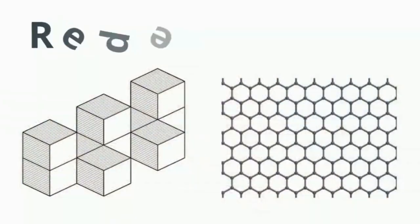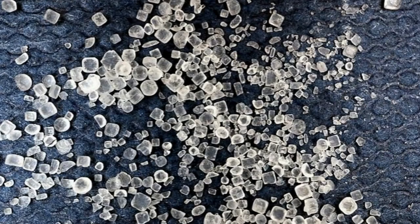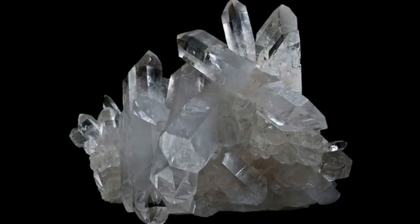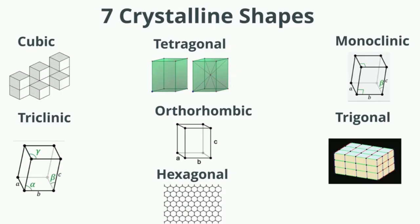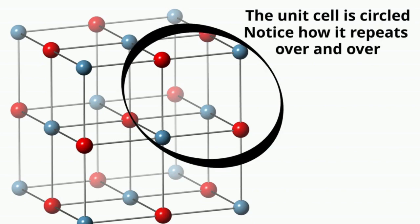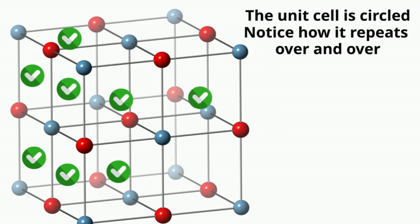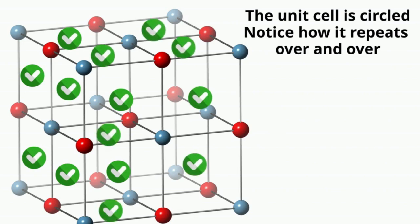A crystalline structure could be described as repeating. The crystal shape is determined by the arrangement of the atoms or molecules within the crystal. Each mineral has a definite crystal structure, and all minerals can be grouped into crystal classes according to the kinds of crystals they form. Minerals also have the same chemical composition throughout. The smallest group of particles that constitutes this repeating pattern is called the unit cell. The unit cell completely reflects the symmetry and structure of the entire crystal, which is built up by repetitive translation of the unit.